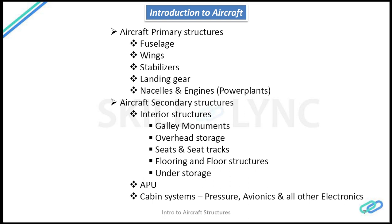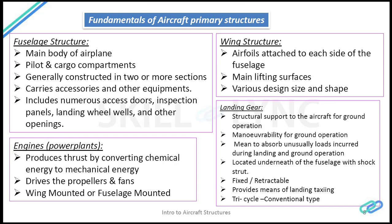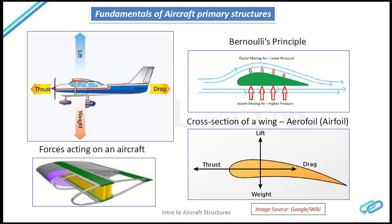To give you a quick recap: the primary structures include fuselage, wings, stabilizers, landing gear, nacelles, and engines. The secondary structures include interior structures — galley monuments, auxiliary power units, and cabin systems such as avionics, pressurization systems, and all other electronics. I have also explained the functionalities of the different primary structures.